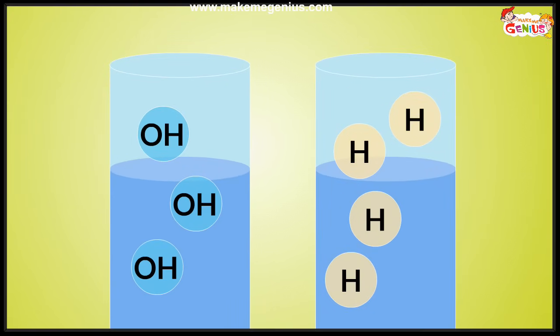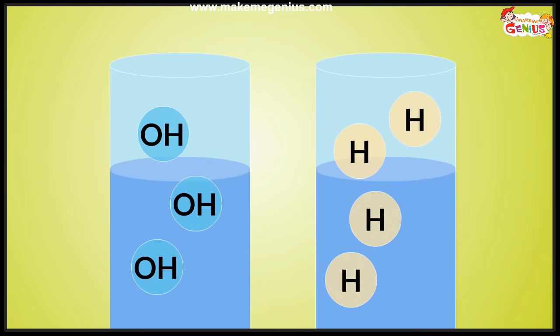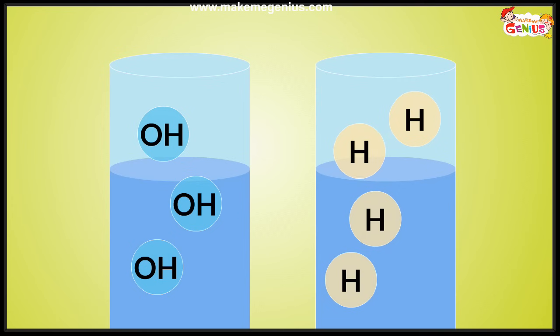In one liquid I can see more OH — meaning more hydroxide ions. And in the other liquid there are more hydronium ions. Remember this: if a liquid produces more hydroxide, it is a base; if it produces more hydronium, it is an acid. So the left-side liquid is a base, and the right-hand side liquid is an acid.